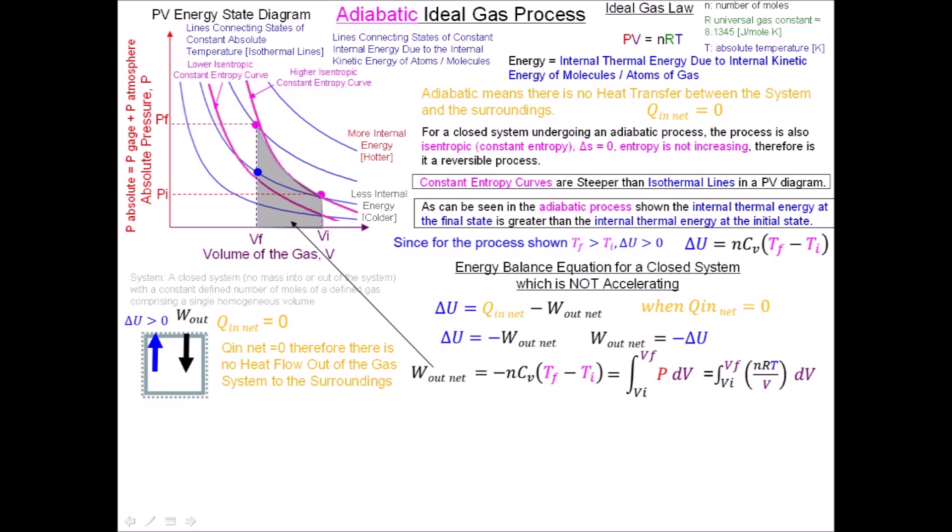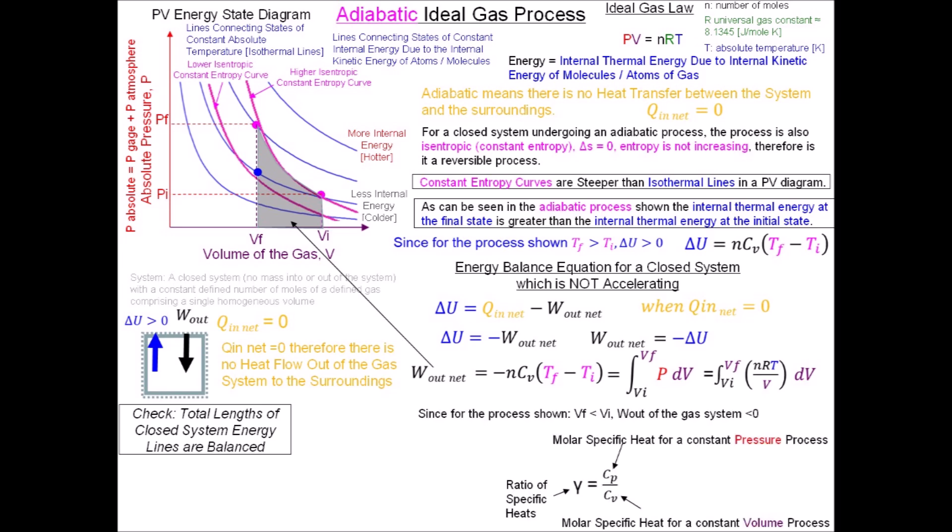Now that we have an equation for the change in internal thermal kinetic energy delta U and an equation for the energy in terms of work out, we can see that the directionality and magnitudes of these equations match our original thoughts from the system energy diagram, and the energy balance for this closed system is confirmed. As an additional check, for any compressive system we know that the work out of the gas is less than zero.